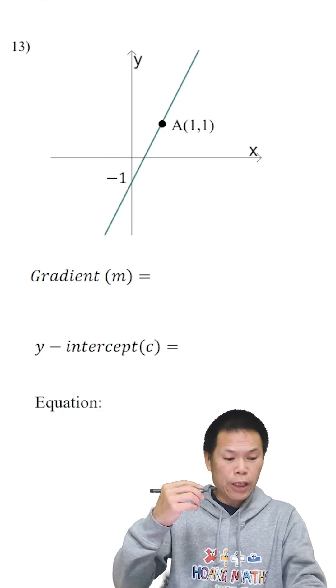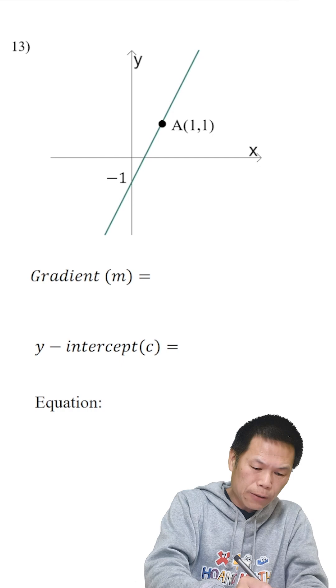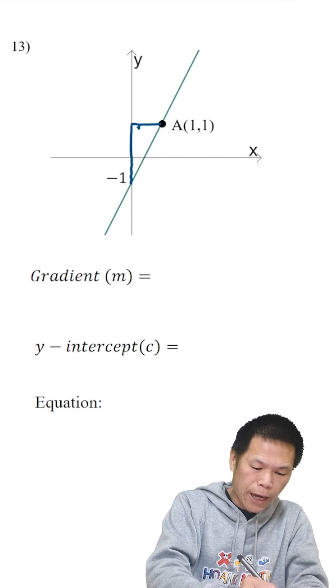So we know that the gradient is positive. Let me just draw a triangle first. So like this, okay?